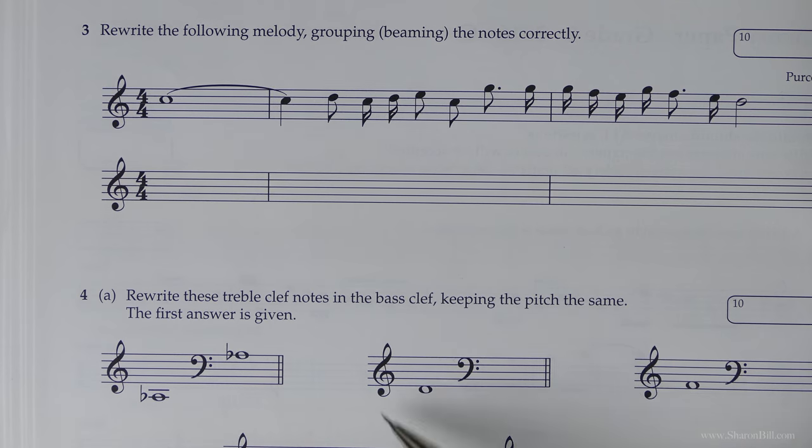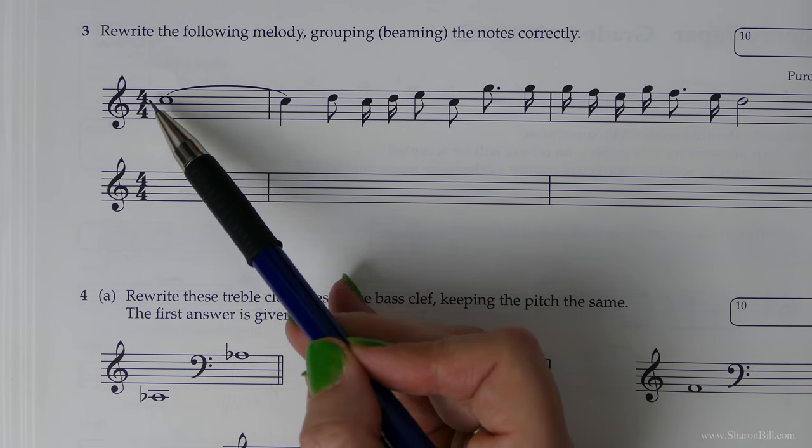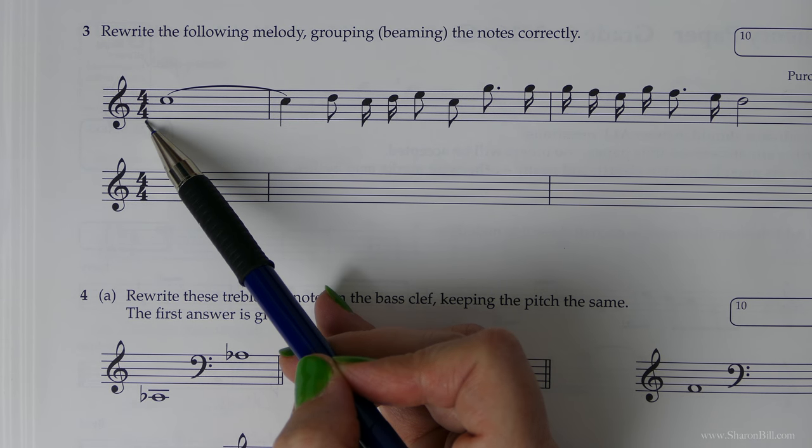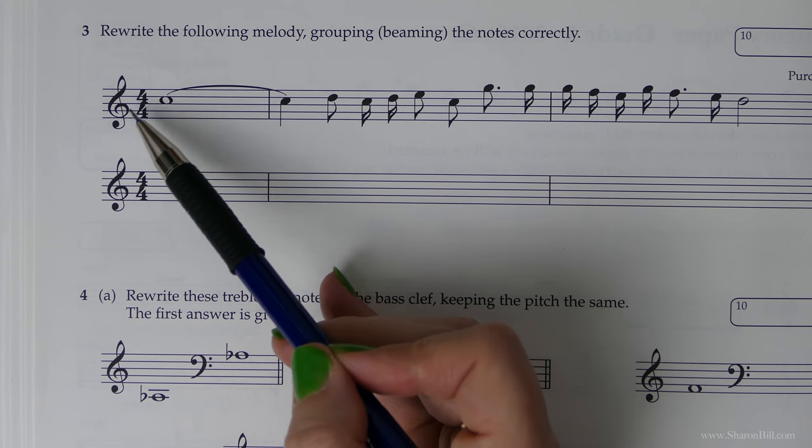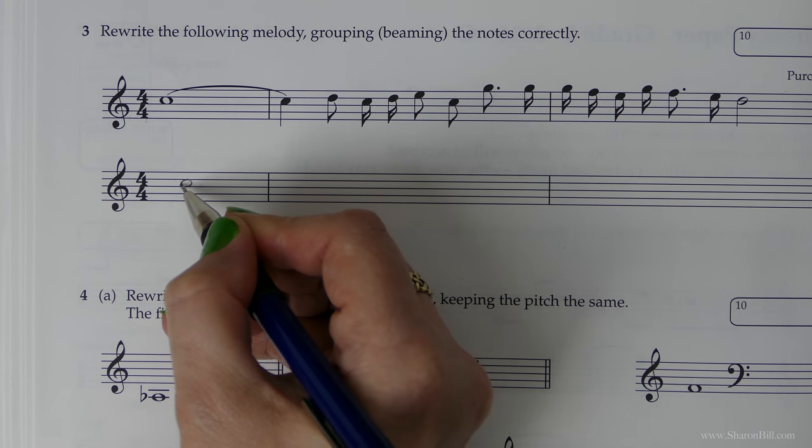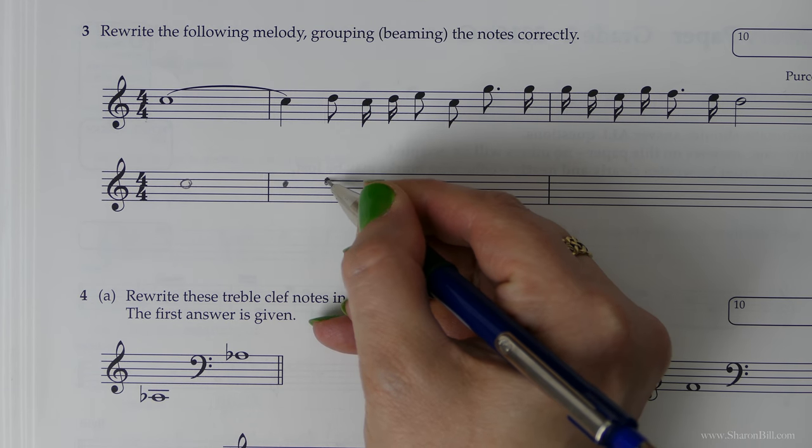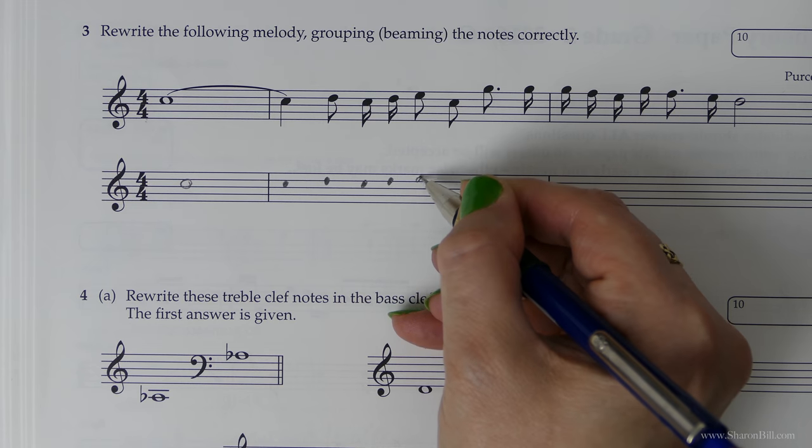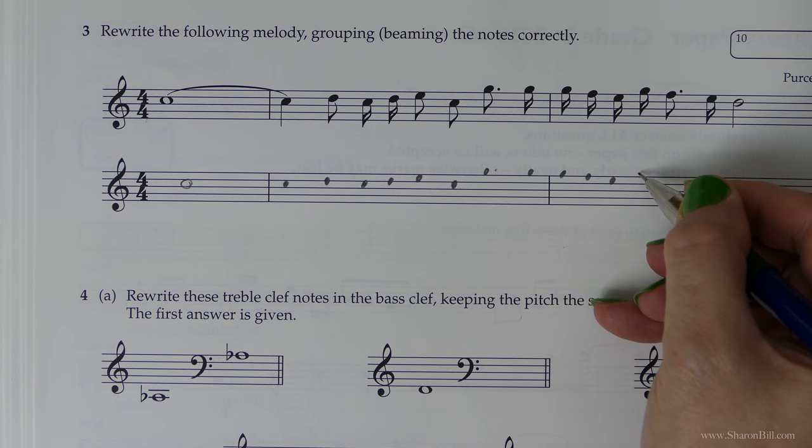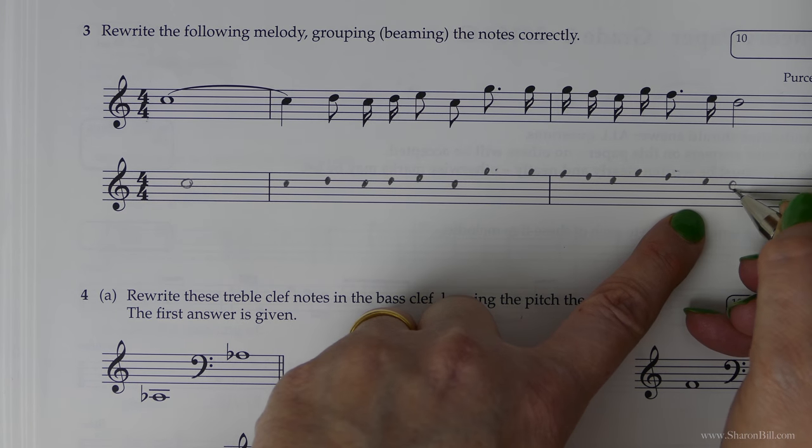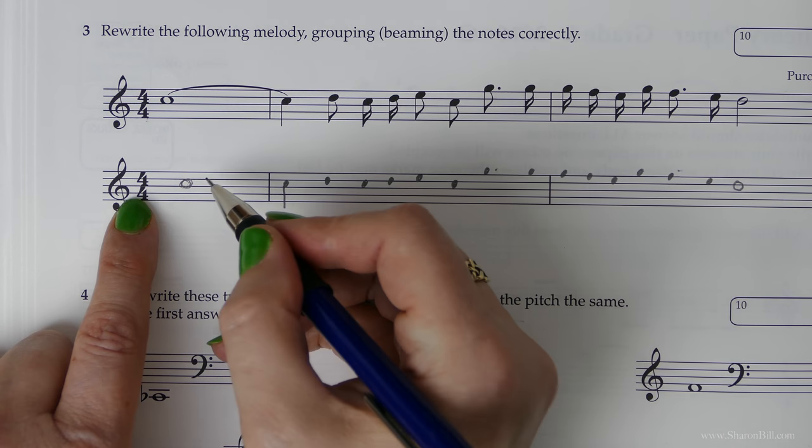Let's look at question three. Question three asks us to rewrite the following melody and we've got to group or beam these notes correctly. The time signature is what we need to look at first because that will tell us how to group these notes. We're grouping in crotchet beats or quarter notes. The rule is that we always need to show where each new crotchet beat falls. We're grouping in quarter notes or crotchet beat groups. So I'm just going to go on and write the note heads out. Let's do everything that we can before we need to start thinking.